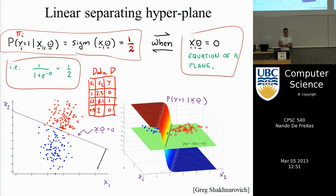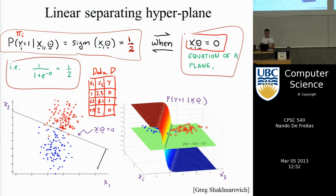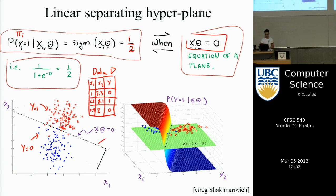This gives us the mechanism for doing classification. The equation sigmoid(x_i theta) equals one-half is equivalent to x_i theta equals zero, which is just the equation of a line — or plane in general. If you have data of two classes — points with y equal to 1 and points with y equal to 0 — then the plane x times theta equals zero separates the red points from the blue points. In 3D, the curve p(y=1 | x, theta) is an S-shape in 2D, and cutting that S at height one-half gives the separating line.